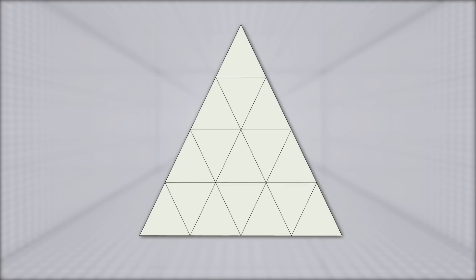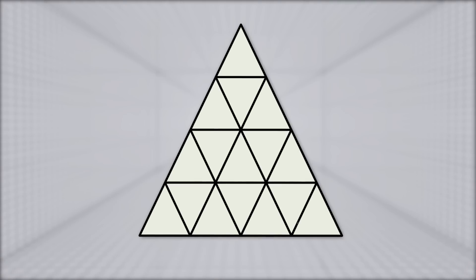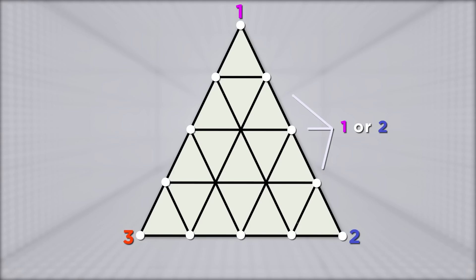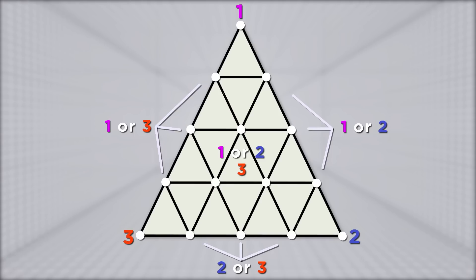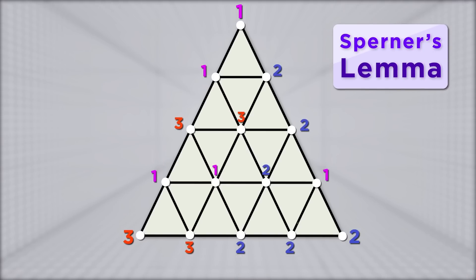Start with a triangle and break it up into a bunch of smaller triangles. Label the three points, or vertices, of the big triangle 1, 2, and 3. Label each vertex on the sides of the big triangle with either of the labels at the endpoints — so these are labeled 1 or 2, these are 2 or 3, and these are 1 or 3. Finally, label the inside vertices 1, 2, or 3 — it doesn't matter. Here's the fact known as Sperner's Lemma: there will always be some smaller triangle with each of the three labels on its corners.